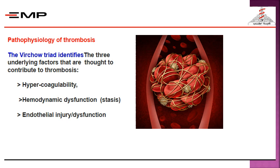In this slide we see the thrombus on the right side — it is platelets and RBCs entangled inside the fibrin mesh. The pathophysiology of thrombosis is explained by something called Virchow's triad, which identifies the three underlying factors contributing to thrombosis.